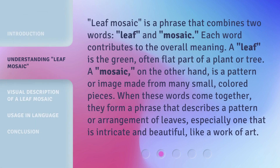Leaf Mosaic is a phrase that combines two words: leaf and mosaic. Each word contributes to the overall meaning. A leaf is the green, often flat part of a plant or tree. A mosaic, on the other hand, is a pattern or image made from many small, colored pieces. When these words come together, they form a phrase that describes a pattern or arrangement of leaves, especially one that is intricate and beautiful, like a work of art.